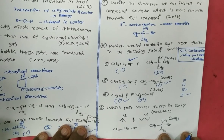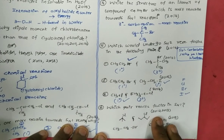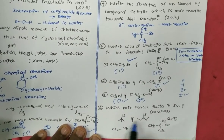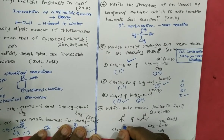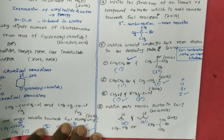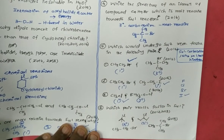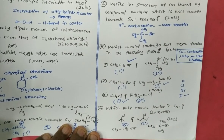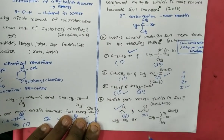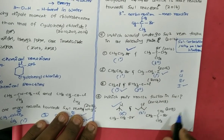The sixth question: which pair reacts faster in SN1? This was asked in 2012 and 2013. We determine the degree of each compound. If one is 3° and the other is 2°, the 3° compound reacts faster in SN1, because a 3° carbocation is more stable according to carbocation stability order.